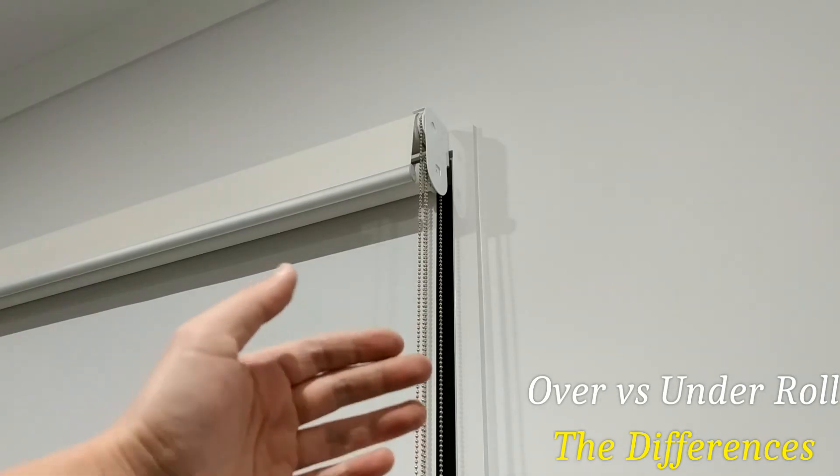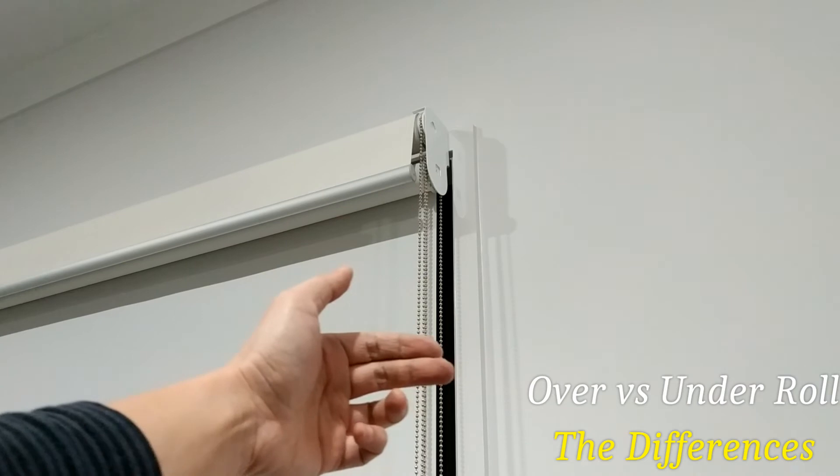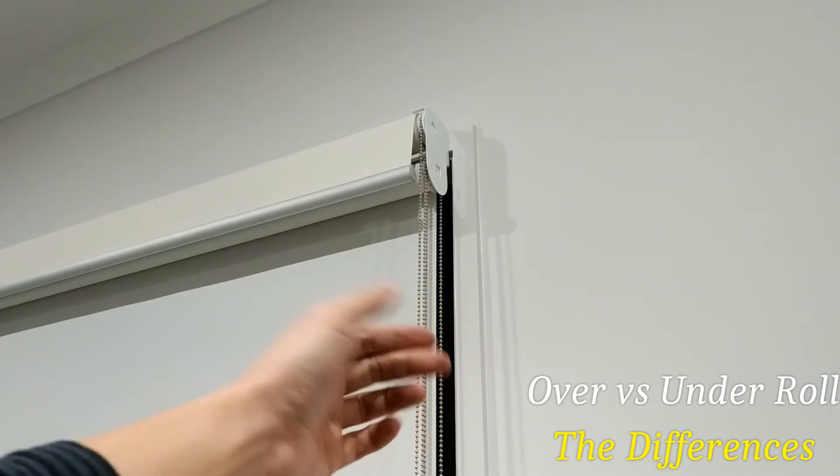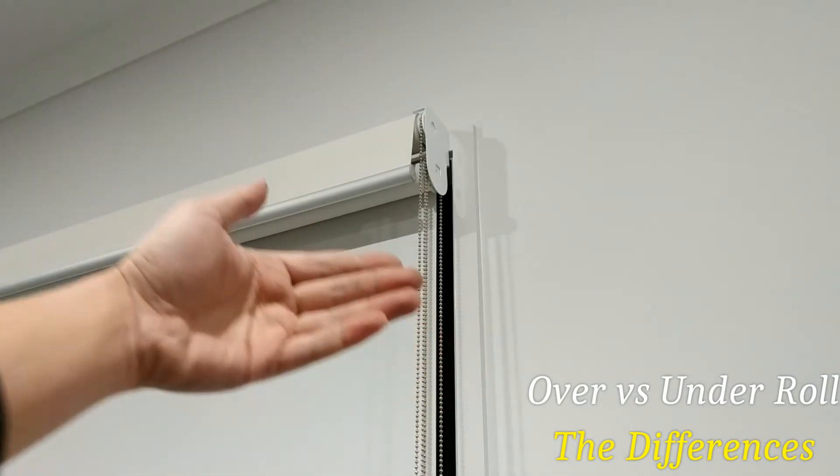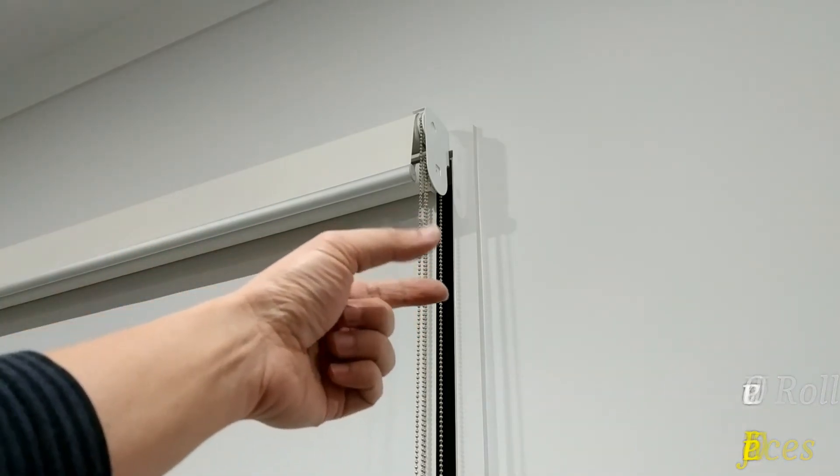In terms of pros and cons, the roll under can actually get the blind closer to the window, which means less of a gap. Whereas the roll over means it's further away from the window, which means there's potentially more of a gap there.